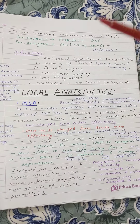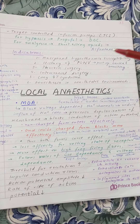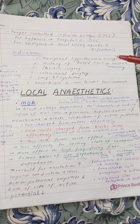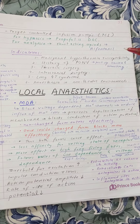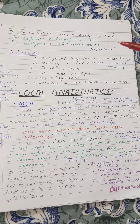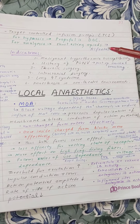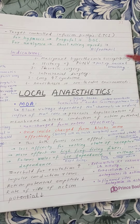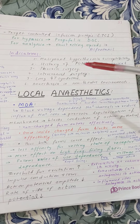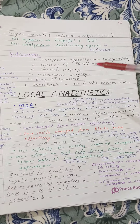We have already read that in malignant hyperthermia, there is susceptibility for individuals to get a reaction towards inhaled anesthetics. So if there is susceptibility for malignant hyperthermia, then we don't give inhalational anesthesia. Secondly, if there is a history of post-operative nausea and vomiting, we also avoid inhalational anesthesia.